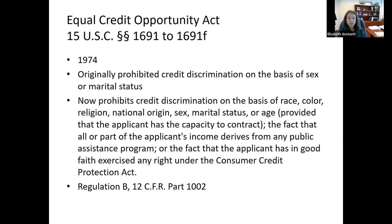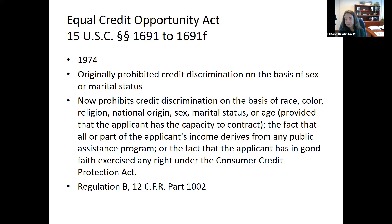So the Equal Credit Opportunity Act was enacted to prohibit discrimination on the basis of sex or marital status. Over time it has been amended, and now it prohibits credit discrimination on the basis of race, color, religion, national origin, sex, marital status, or age — provided you can contract. And there are certain exceptions for giving older individuals some benefit.